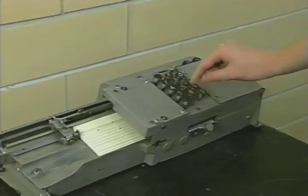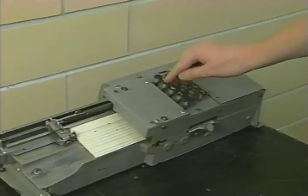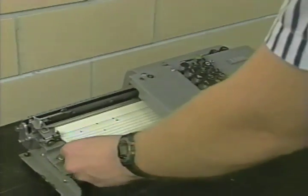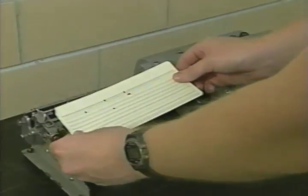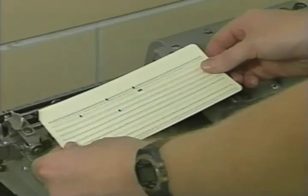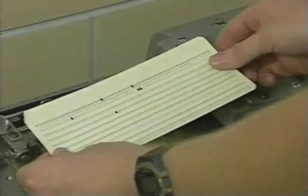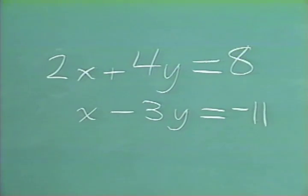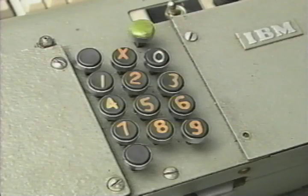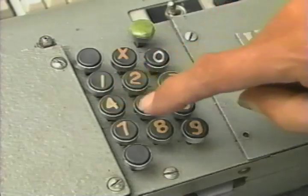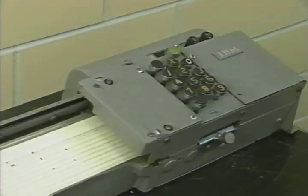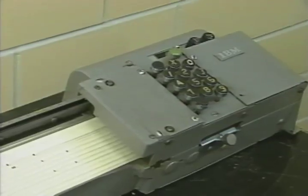The first step is to enter the data into the ABC. There is no keyboard for data entry, so you have to punch the numbers in on cards. These punch cards are the same type that were used until the 1970s for getting data into a computer. Our first equation is 2x plus 4y equals 8, so we punch in the numbers 2, 4, and 8.